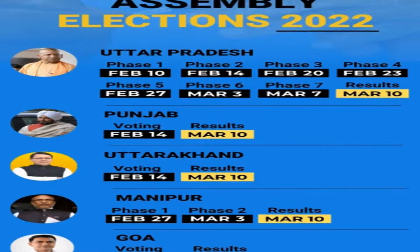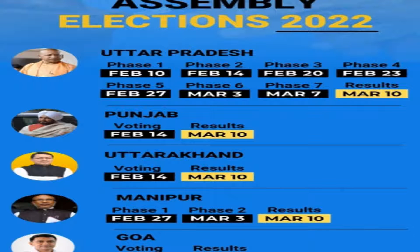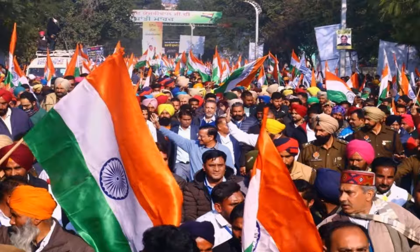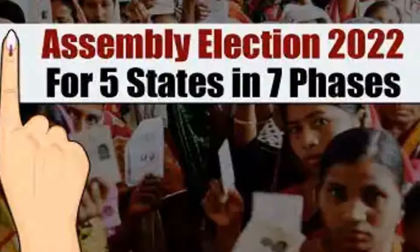Uttarakhand will go to poll in 7 phases from 10 February to 7 March. Punjab, Uttarakhand, and Goa will vote on 14 February, and Manipur will vote on 27 February and 3 March. Elections in Manipur will take place in 2 phases.